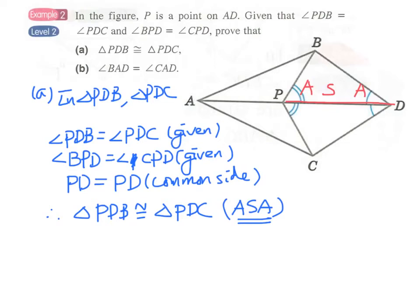Now for part B, prove that angle BAD equals angle CAD. Let's look at these two angles. Angle BAD is right here and angle CAD just beneath, underneath it.